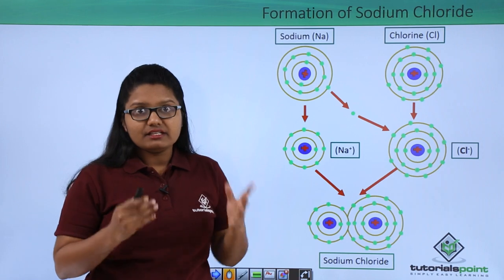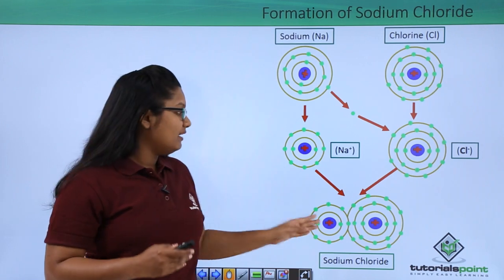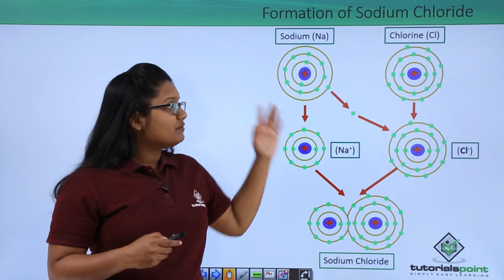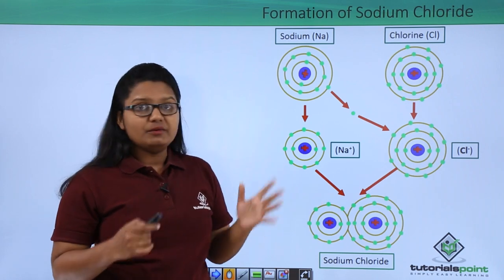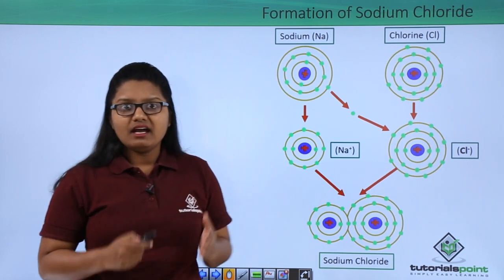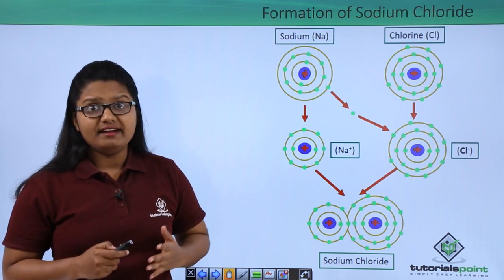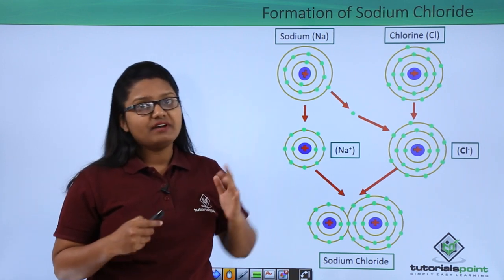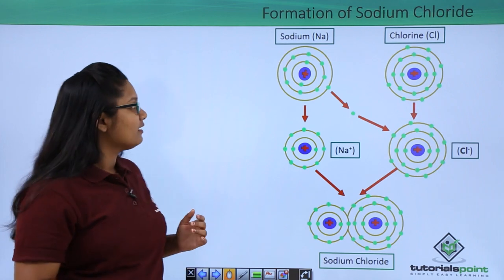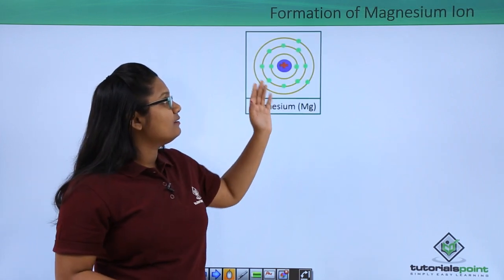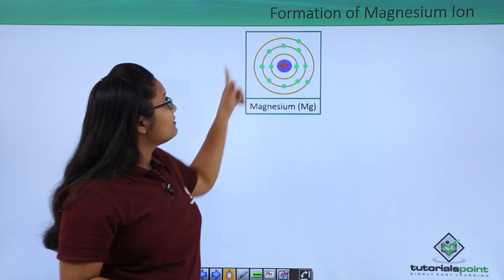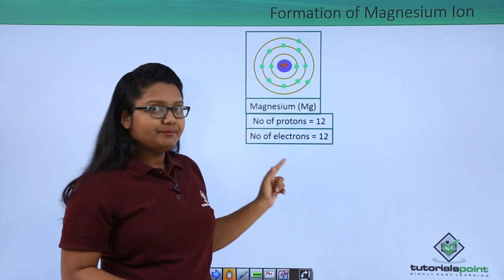We see that a metallic ion and a non-metallic ion, which is negatively charged, stick together to form an ionic compound — that is sodium chloride. Now let us move ahead and see the formation of ions in other metals and non-metals, starting with the formation of the magnesium ion.